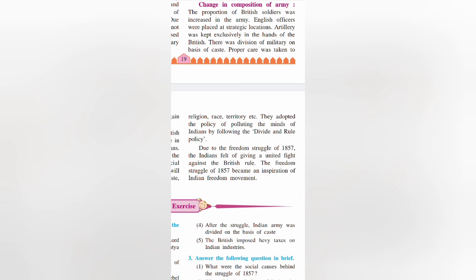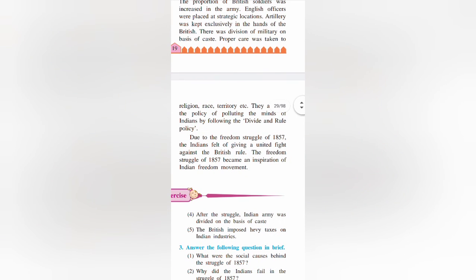This is additional context not in your textbook. The British followed the policy of divide and rule by forming these two separate regiments and polluting the minds of both Hindus and Muslims. In conclusion, due to the Freedom Struggle of 1857, Indians felt the need to give a united fight against British rule. The Freedom Struggle of 1857 became an inspiration for the Indian freedom movement. Thank you, students, for your patience.